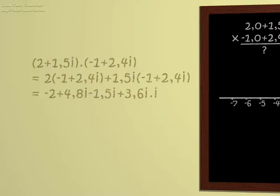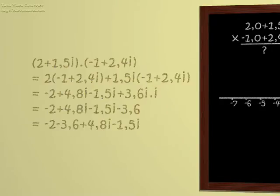which is minus 2 plus 4.8i minus 1.5i plus 3.6i times i. But i squared is minus 1, since we invented i for this purpose. So we get minus 2 plus 4.8i minus 1.5i minus 3.6. And tidying up, that gives us minus 2 minus 3.6 plus 4.8i minus 1.5i, giving us in all minus 5.6 plus 3.3i.